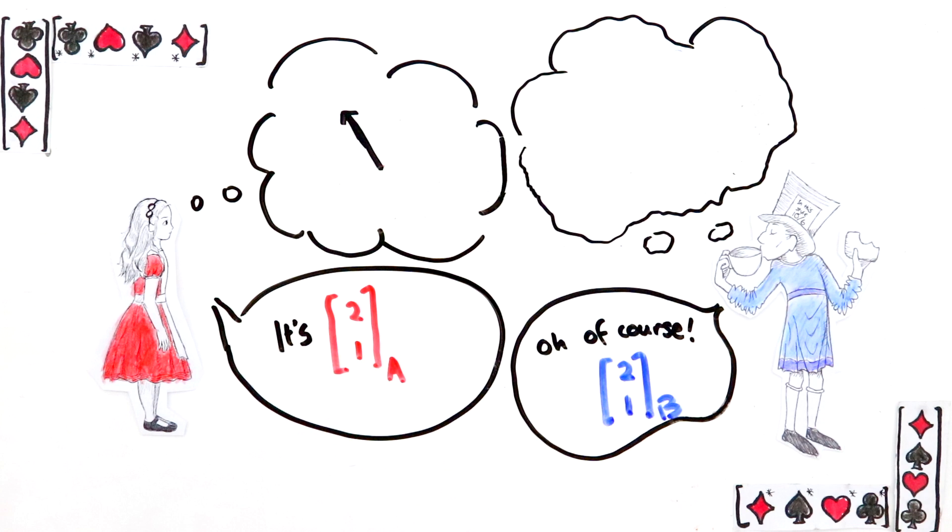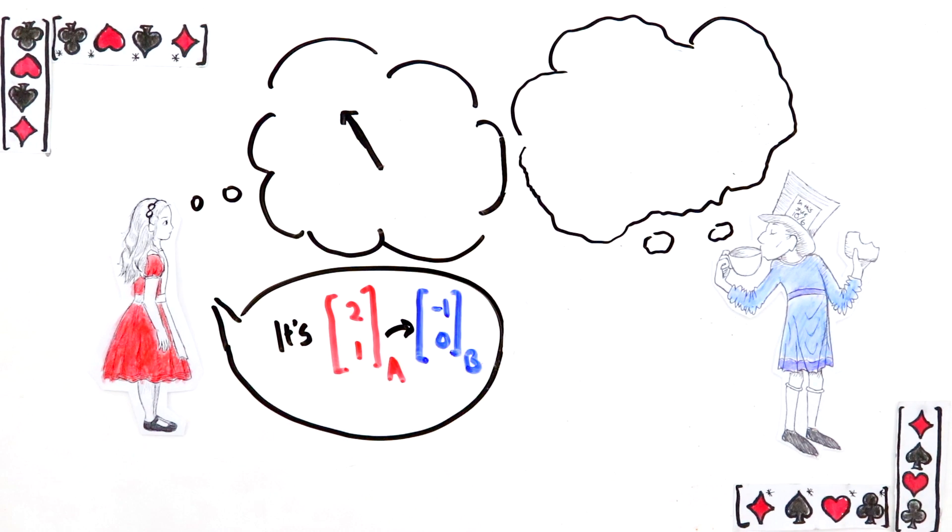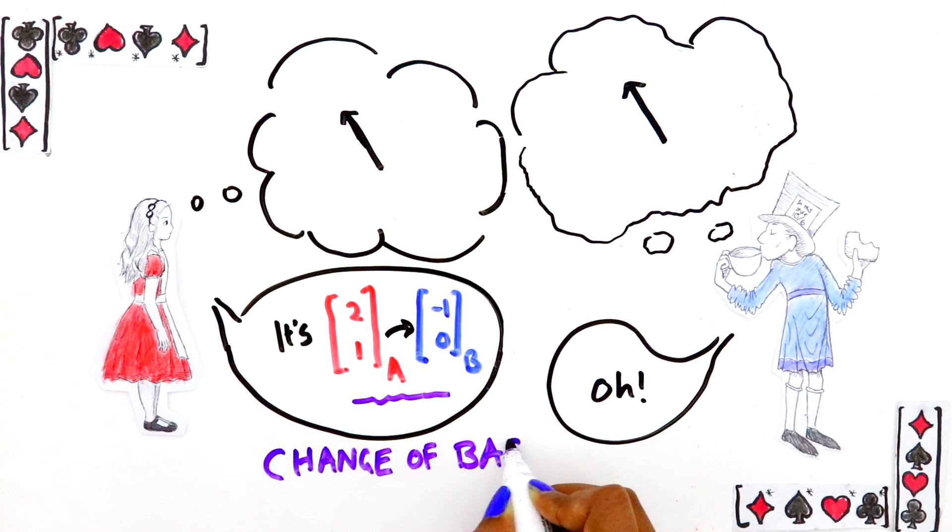Alice realizes that for Bob to understand what vector she meant she needs to describe her vector in his basis for him. That's what a change of basis is. Taking a vector written in one basis and writing it in another basis.